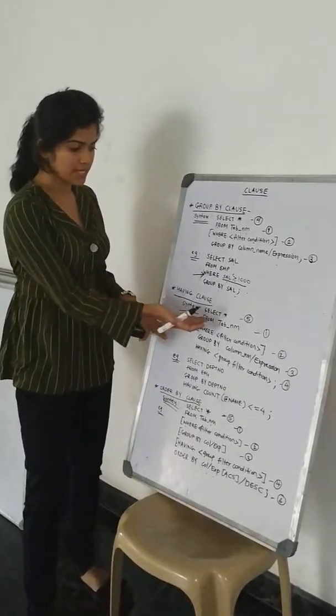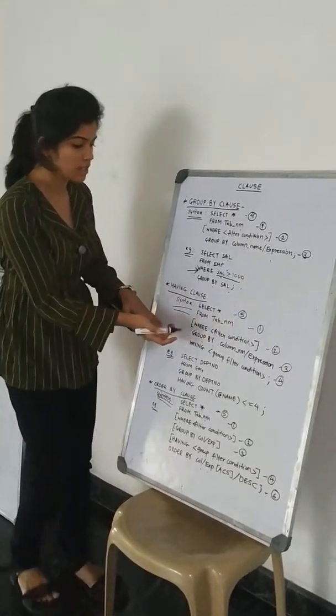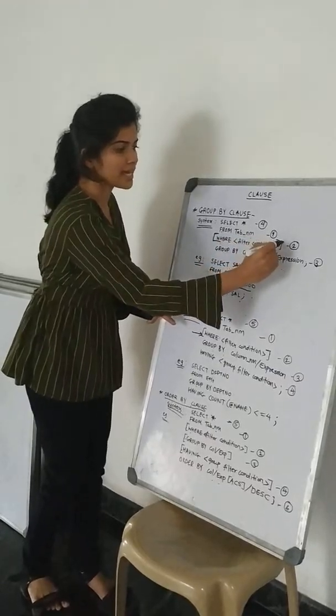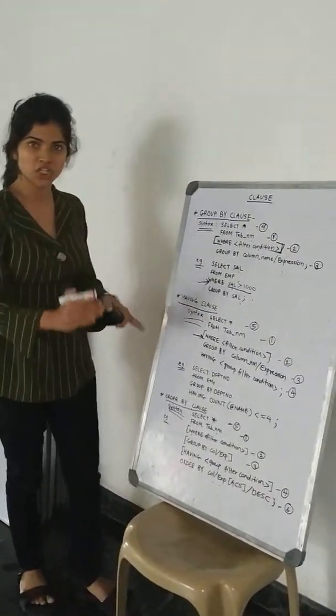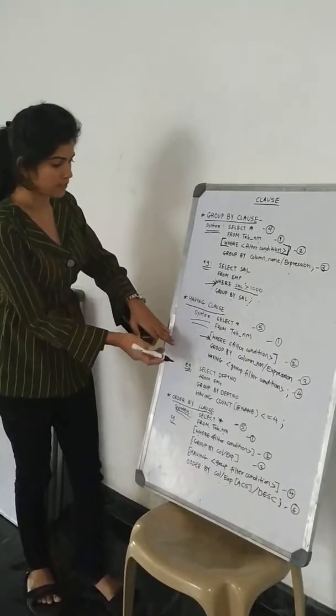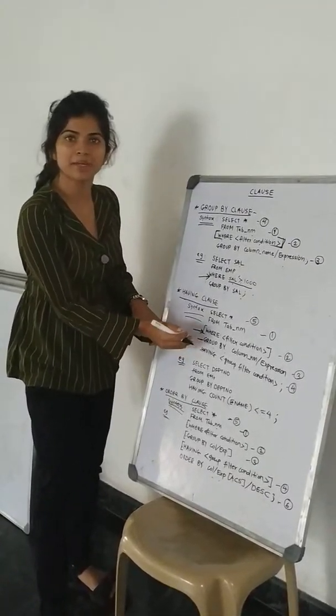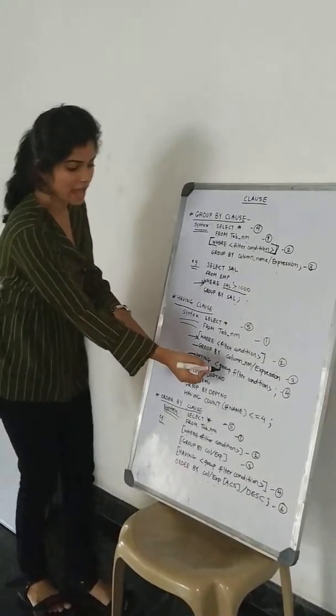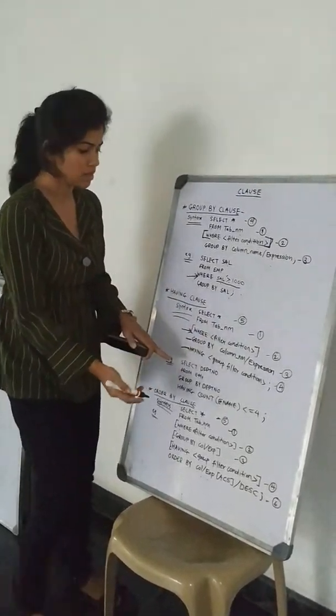The syntax for HAVING is SELECT from which table we want. And then, it is not compulsory. If we are using these kind of brackets, then it is not compulsory. If the condition is there, then we have to use it. And for HAVING, GROUP BY must be compulsory. And for HAVING, we can have the condition of GROUP BY group filters.